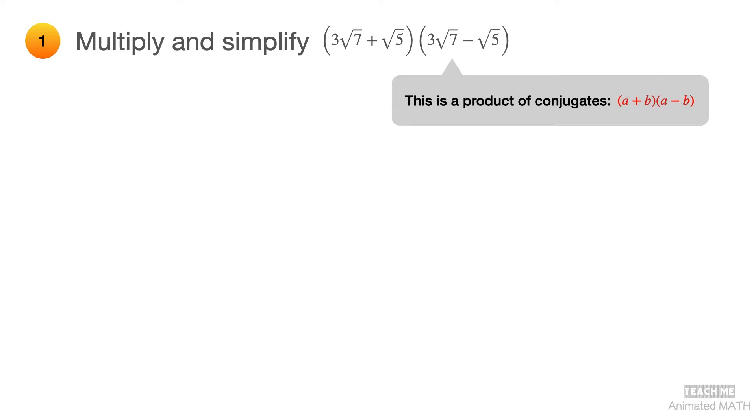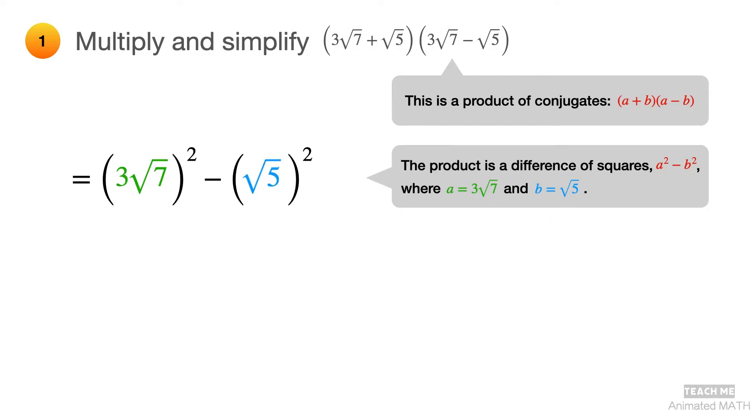This is a product of conjugates which follows the pattern a plus b times a minus b. The product is a difference of squares which is a squared minus b squared. And in this case, a is equal to 3 square root of 7, and b is equal to square root of 5.